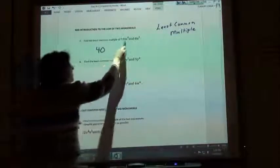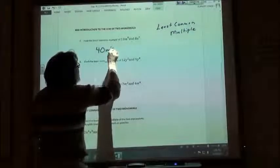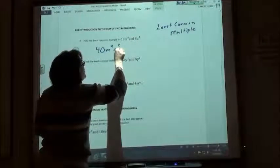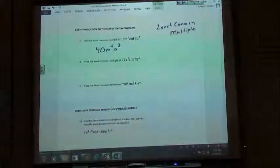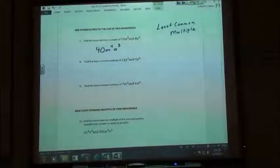In this case we have an M to the fourth and an A to the third and we have to include them both. It's like when you're doing the least common multiple of 2 and 3, you have to take 2 times 3 because they don't have anything in common.